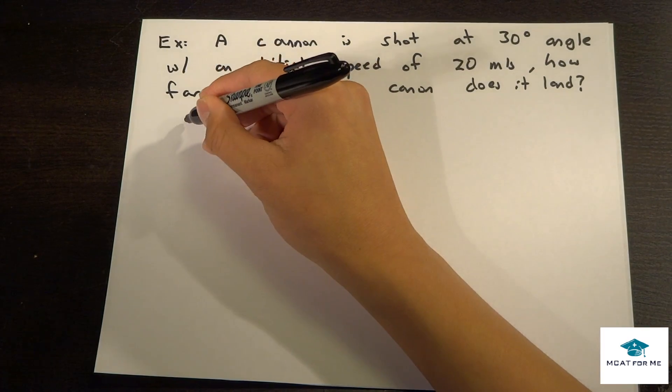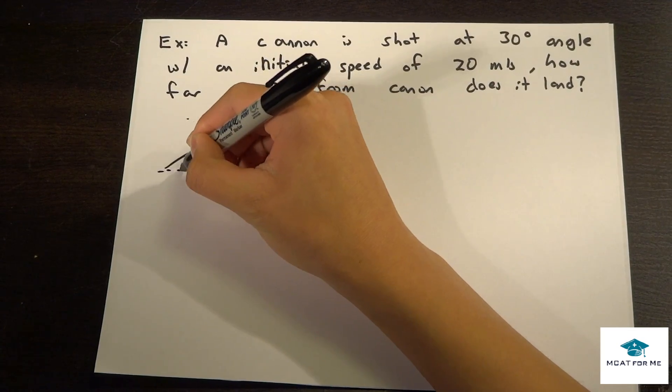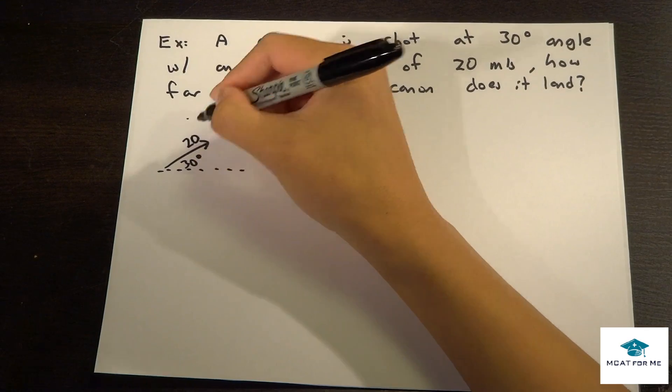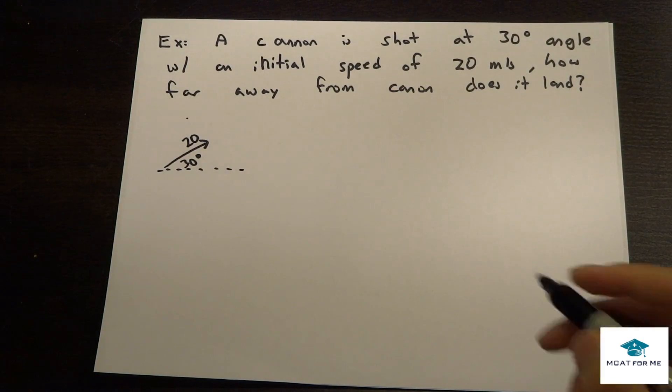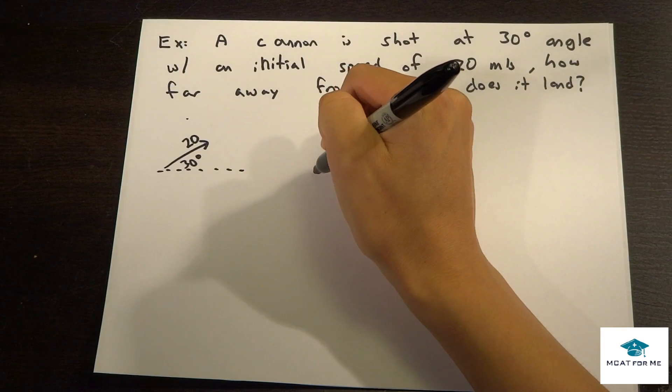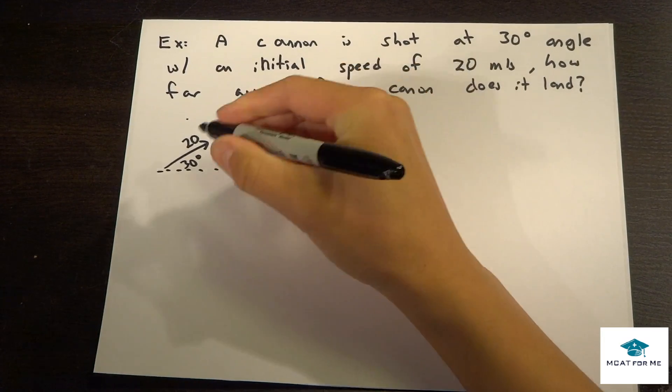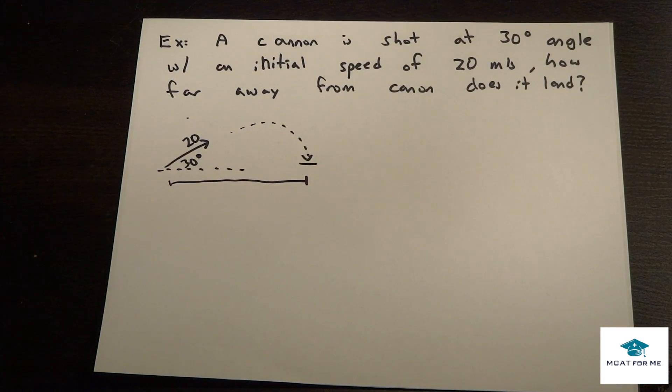The first thing we want to do is draw a picture. It goes up at 30 degrees, initial speed of 20. How far away from the cannon does it land? We want to find the distance between where it falls. Say it goes all the way over here and falls, we want to find this distance right here. So how do we solve this?